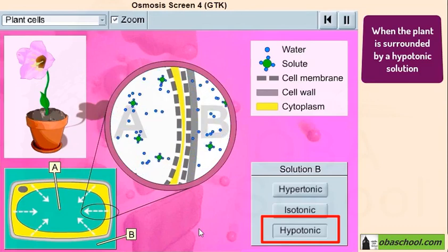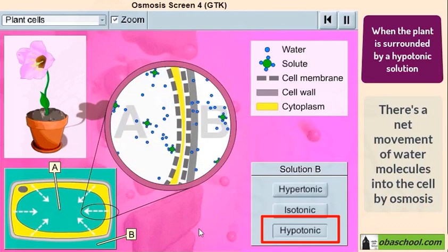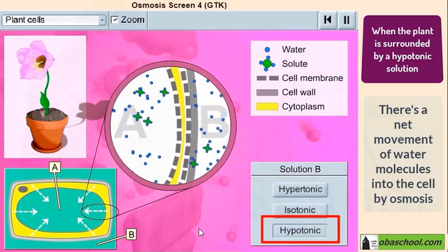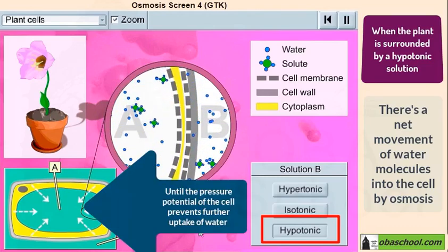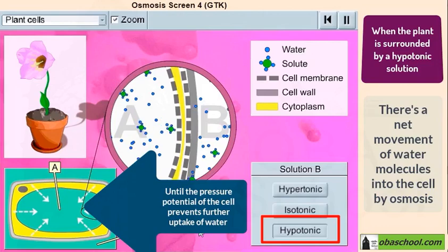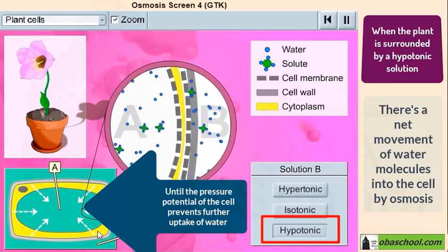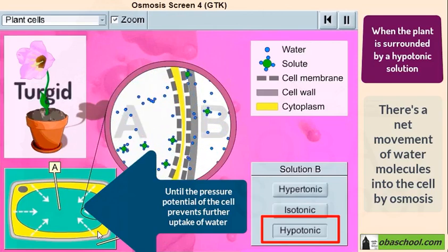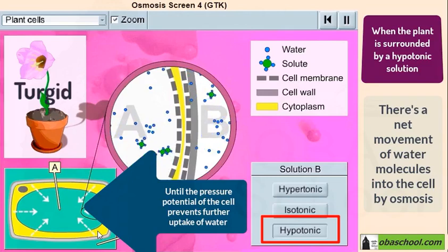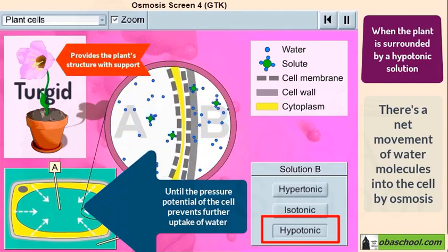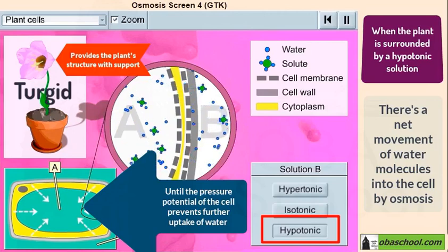And this continues until the pressure potential of the cell prevents further uptake of water. So the cell is said to be turgid. And this turgidity provides the plant's structure with support. Thanks for watching!